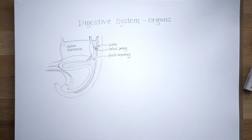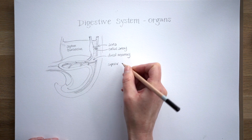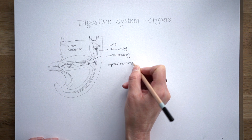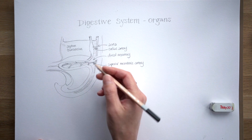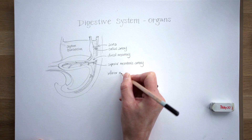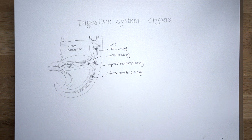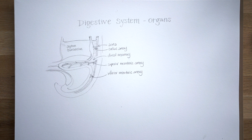We've got the celiac artery supplying the foregut in the abdomen, the superior mesenteric artery supplying the midgut, and the inferior mesenteric artery supplying the hindgut. Those arteries are going to stick around into adulthood, supplying all of the derivatives from those embryonic parts of the primitive gut tube.